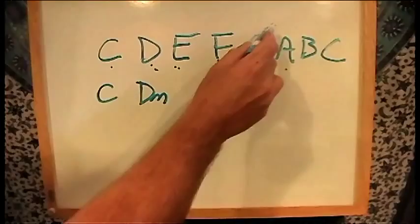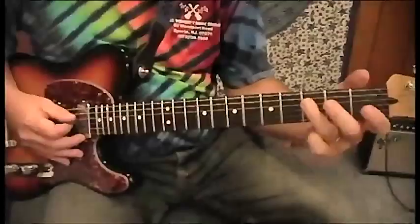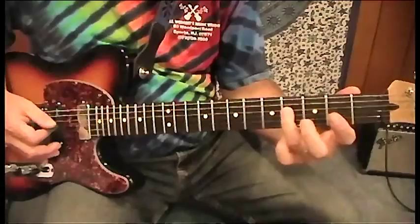We go with the next one, do the same thing: E, G, and B. We get E minor. The flatted 7 of G.